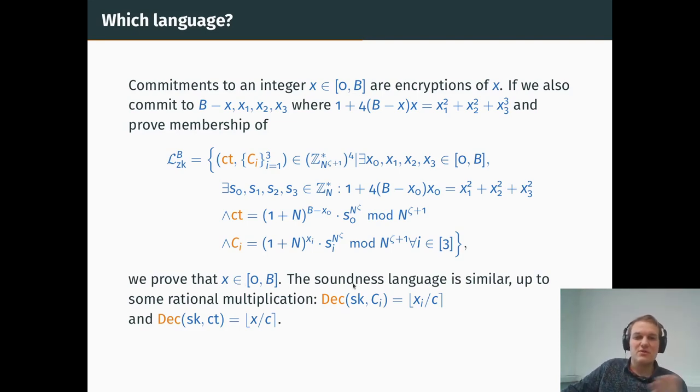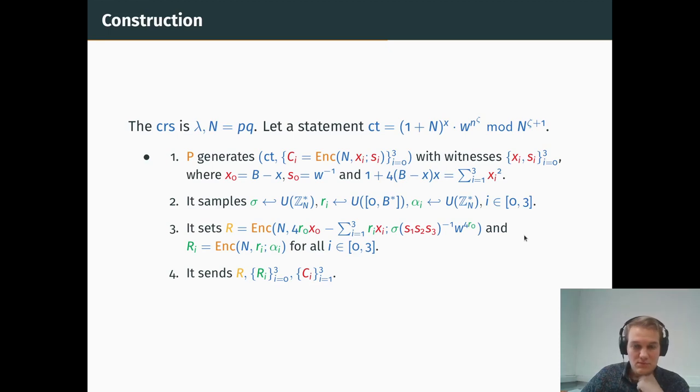So we have to consider, since we are working with gap languages, we need a soundness language. In this soundness language, it's actually the same, except that they are encryptions of encoded rationals. And because of the rounding operation at the end, well, when you decrypt, you may not get this to be true anymore, even if it holds inside this language. So this is why this is a soundness language, which is slightly bigger. Because this may not hold, but the values are not too far from one another.